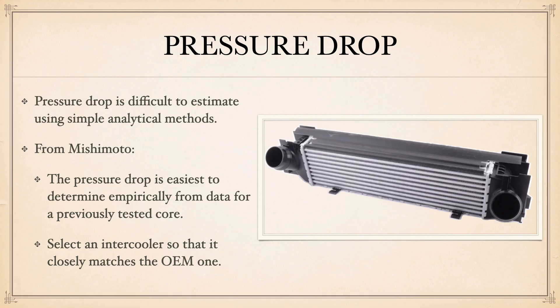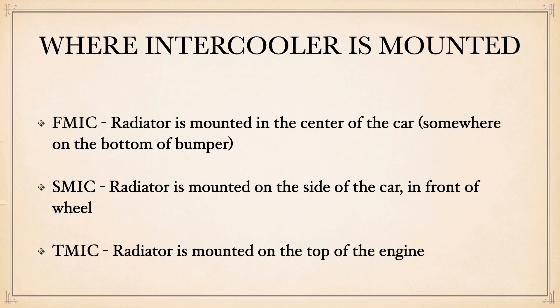When talking about the intercooler, we can also ask about the pressure drop between its inlet and outlet. It's very hard to calculate analytically without CFD. I reached out to Mishimoto, one of the largest aftermarket creators of radiators, and they said the best way to approximate the pressure drop is to measure it on an existing part or choose an intercooler with dimensions very similar to the OEM unit.